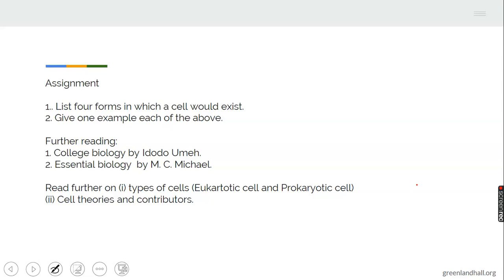Now, having seen the systems and organs, our assignments for this class will be one, to list the four forms in which cells will exist. Give one example each of forms in which cells will exist. Then for our further reading, let us go to our College Biology by Idodo Umeh, Essential Biology by M.C. Michael. And you read further on types of cells, eukaryotic cells, prokaryotic cells, cell theories and contributors to cell theory.